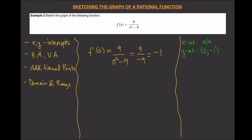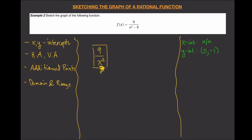The next thing is the horizontal asymptote. For the horizontal asymptote, we look at the leading terms of the numerator and denominator. The numerator's leading term is nine, and the denominator's leading term is x squared. So we look at nine over x squared. We ask: what happens to this expression when x goes to infinity? As x gets bigger and bigger, this expression approaches zero.